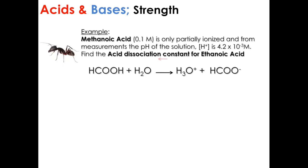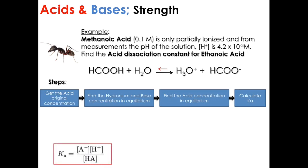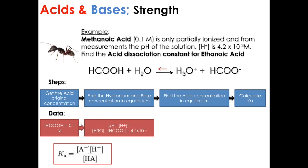Another example is metanoic acid. If we have 0.1 molar, it is only partially ionized, and from measurements the concentration of hydrogen ions is 4.2 times 10 to the negative 3 molar. To find the acid dissociation constant for metanoic acid, first we need the equation. Then, we get the acid's original concentration, which is 0.1 molar. Then, we find the concentration of both products in equilibrium, which is 4.2 times 10 to the negative 3.